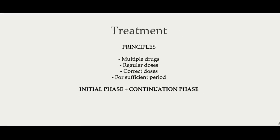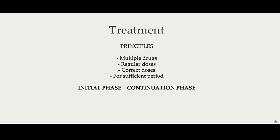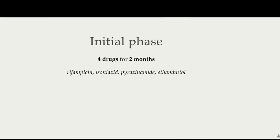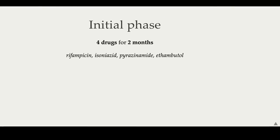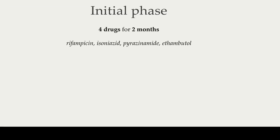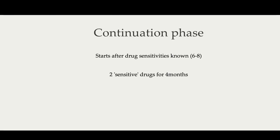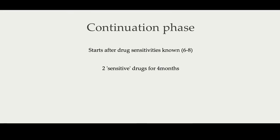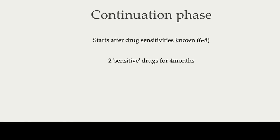Let's move on to talk about the treatment of TB. Multiple drugs are often required, and these require regular and correct doses for a sufficient period. We divide treatment into an initial phase and a continuation phase. In the initial phase, we give four drugs for two months: the typical regimen is rifampicin, isoniazid, pyrazinamide, and ethambutol. In the continuation phase, which starts after drug sensitivities are known — typically after six to eight weeks — we give two sensitive drugs for four months.